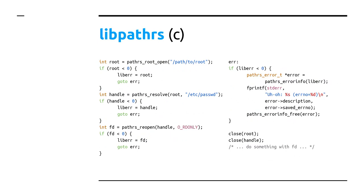This is what the C API looks like — basically doing the open operation. Unlike the Rust version where you have an object you're dealing with, everything is file-descriptor-based, which is the most C-like API you could get for this. The slight downside is that you have to make sure you always use the libpathrs handlers, because if you use the wrong one it wouldn't be safe. We don't return errno — we have our own error thing, but it's very similar: we get a negative error and you can get the information from libpathrs about what the error was.